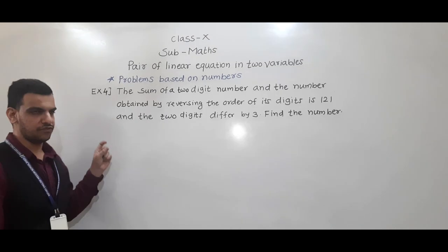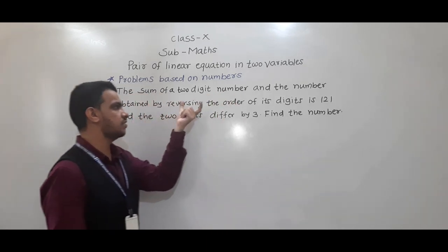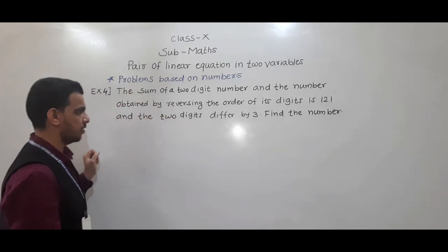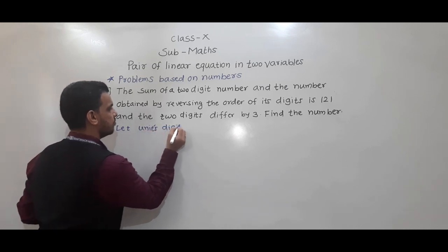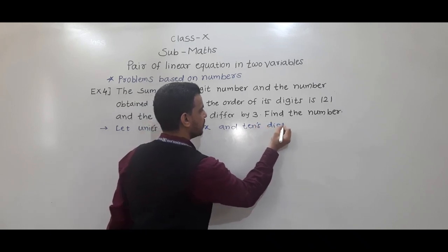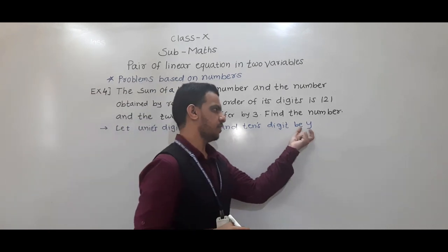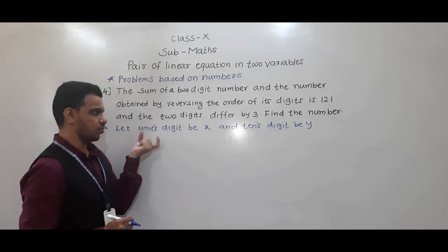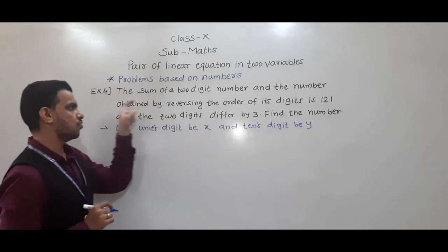Now the fourth example: the sum of a two-digit number and the number obtained by reversing the order of its digits is 121, and the two digits differ by 3. Find the number. Let units digit be x and tens digit be y. So the original number is 10y plus x.